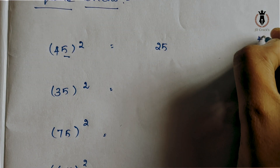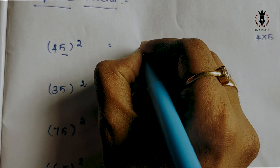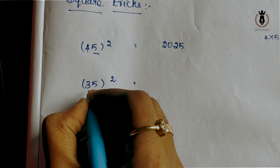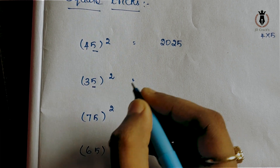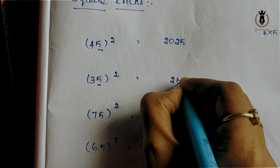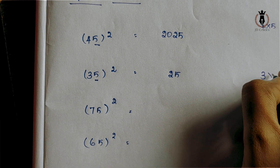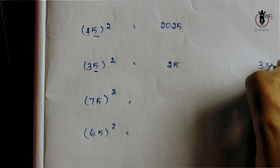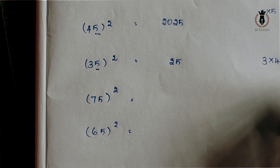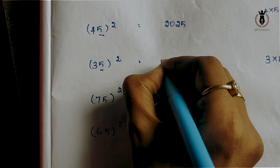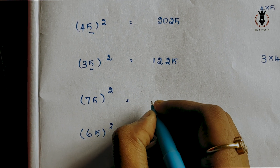4 square is 16, and 4 into 5 is 20, so total is 2025. Now, 75 square — 35, the remaining part. Whether it is 15 or 4 square — 75 square is 5625.